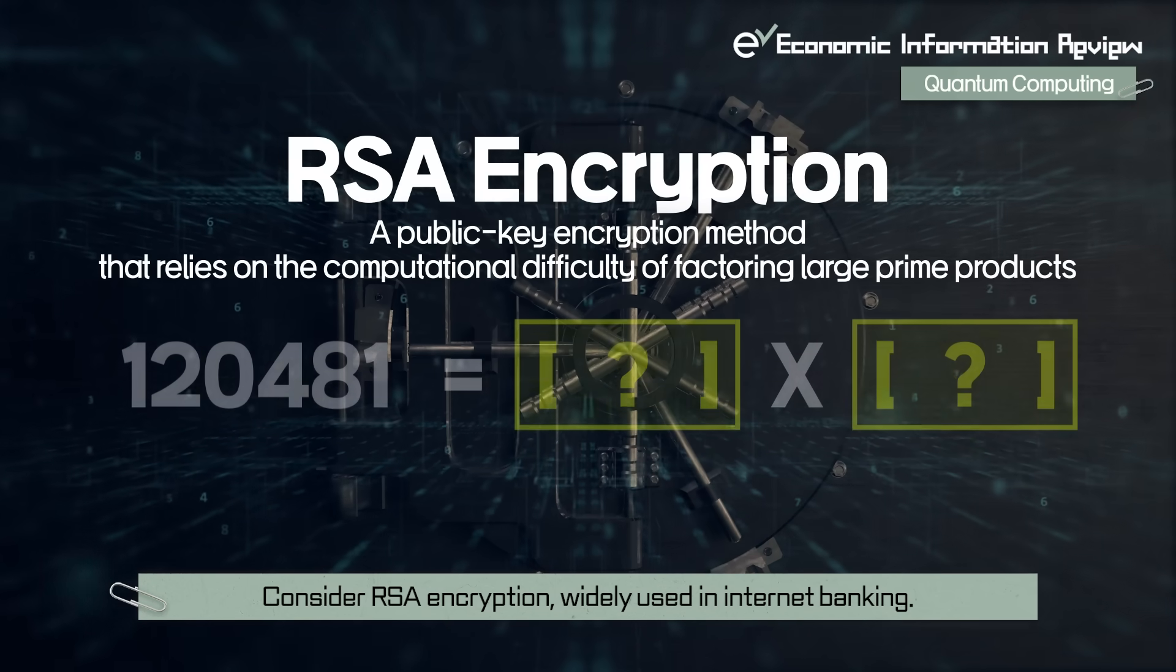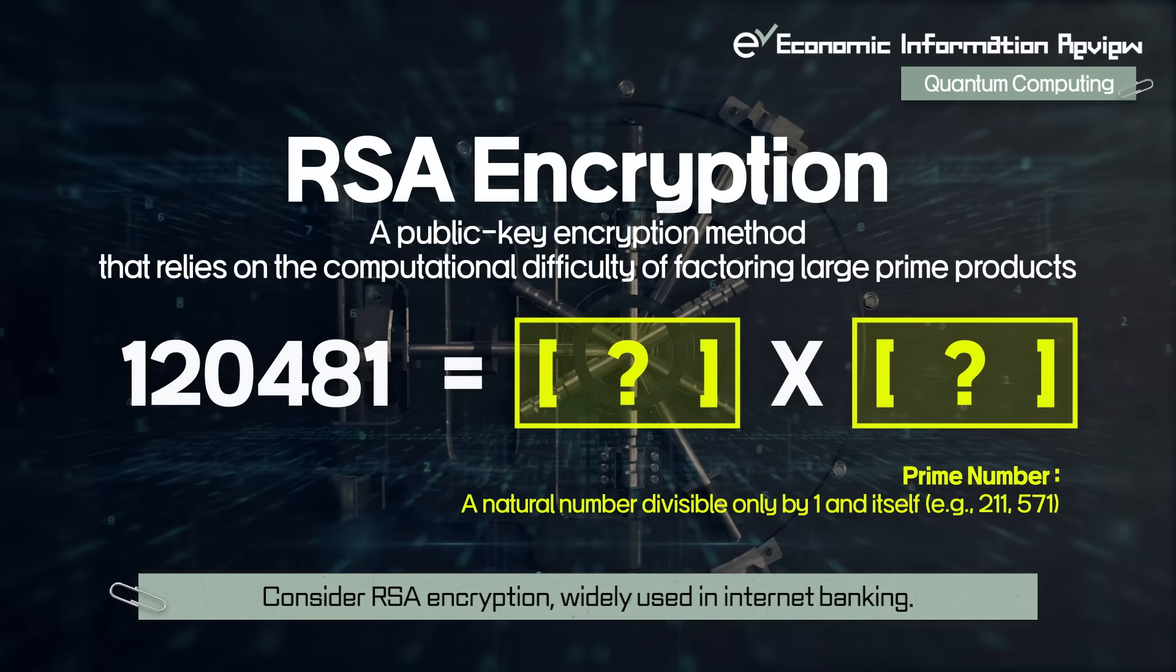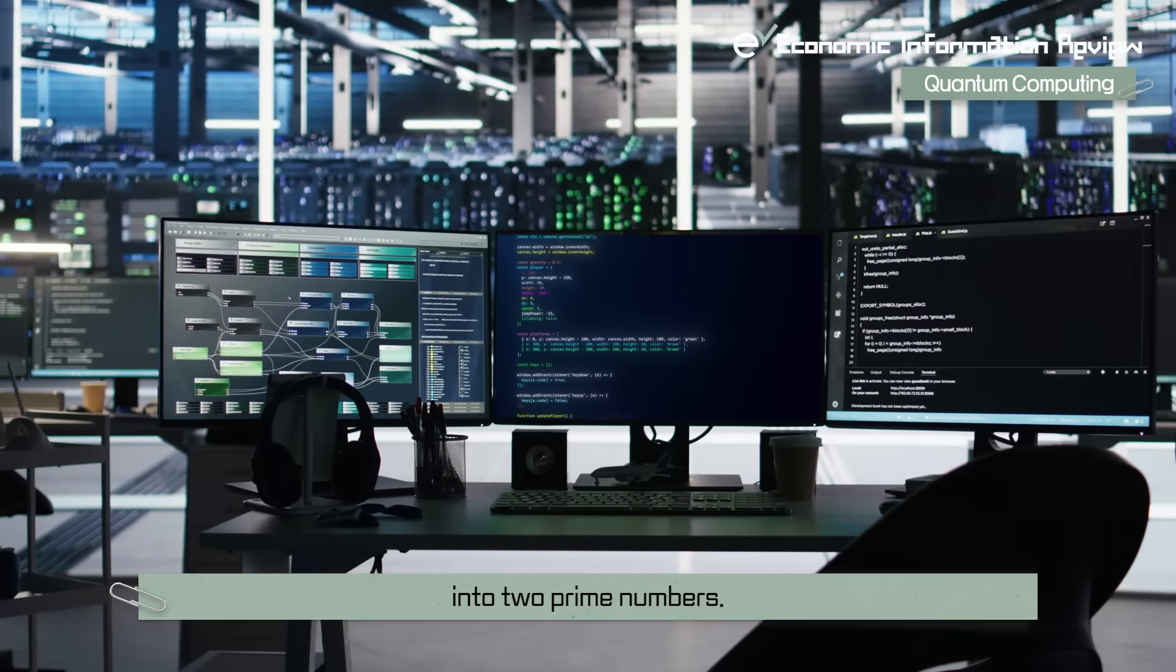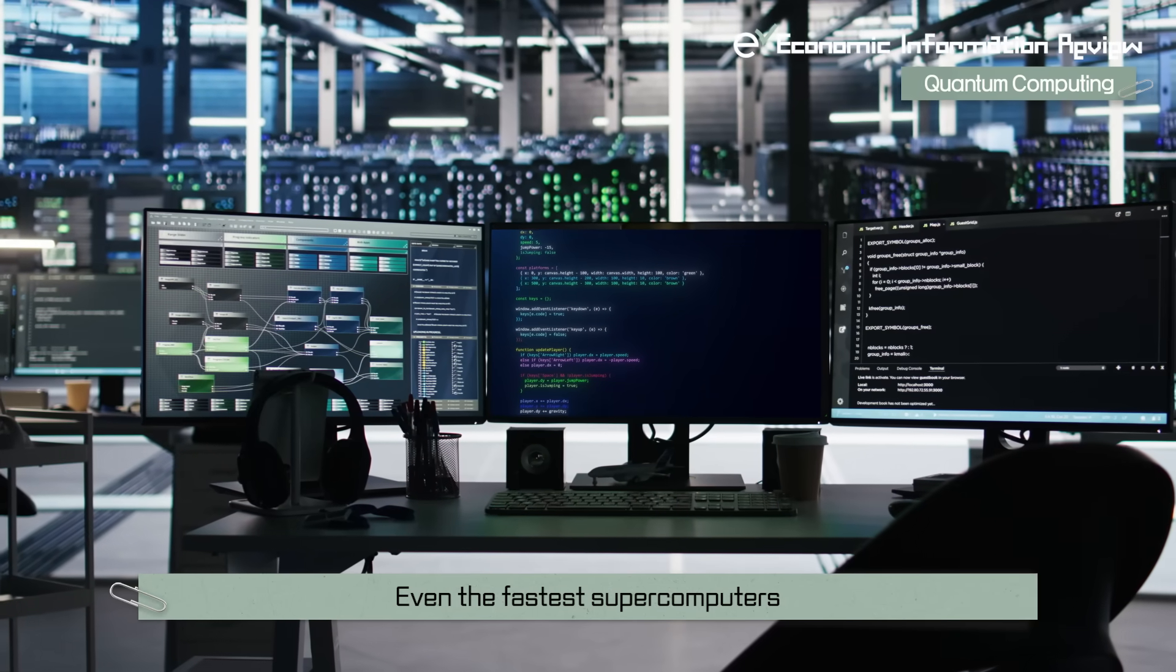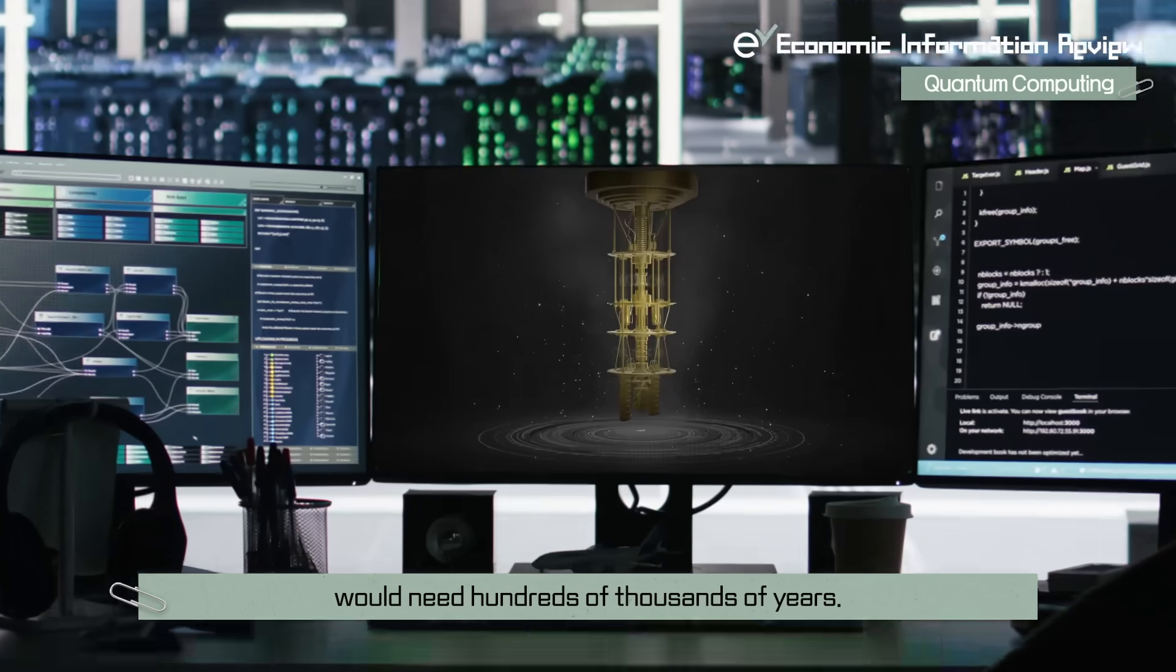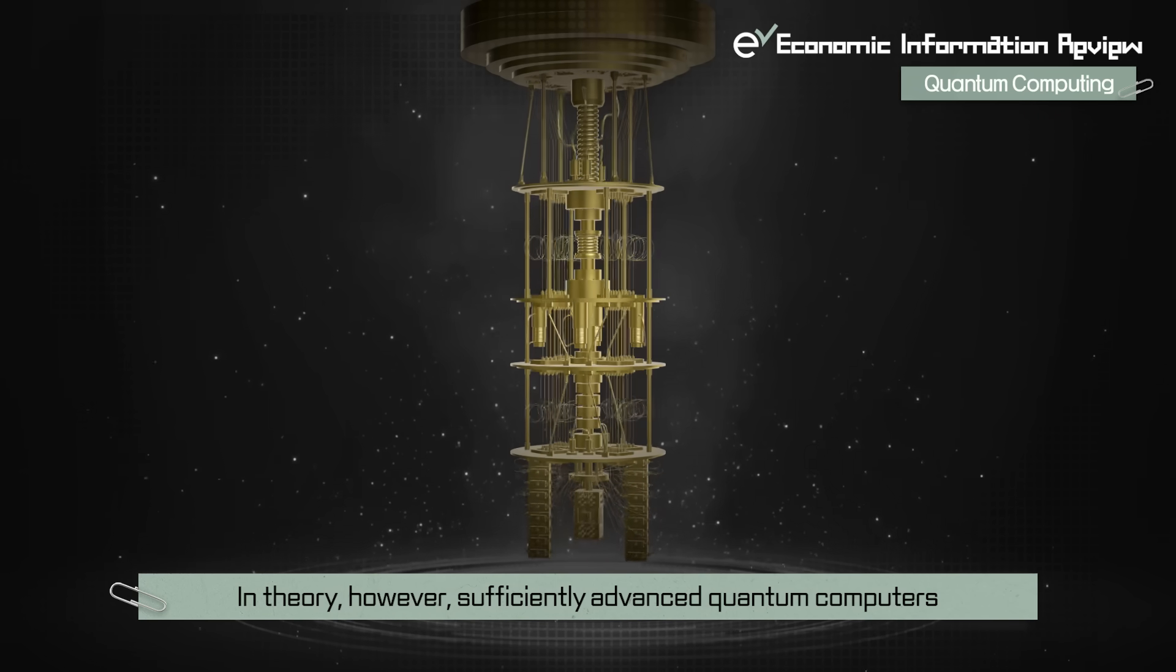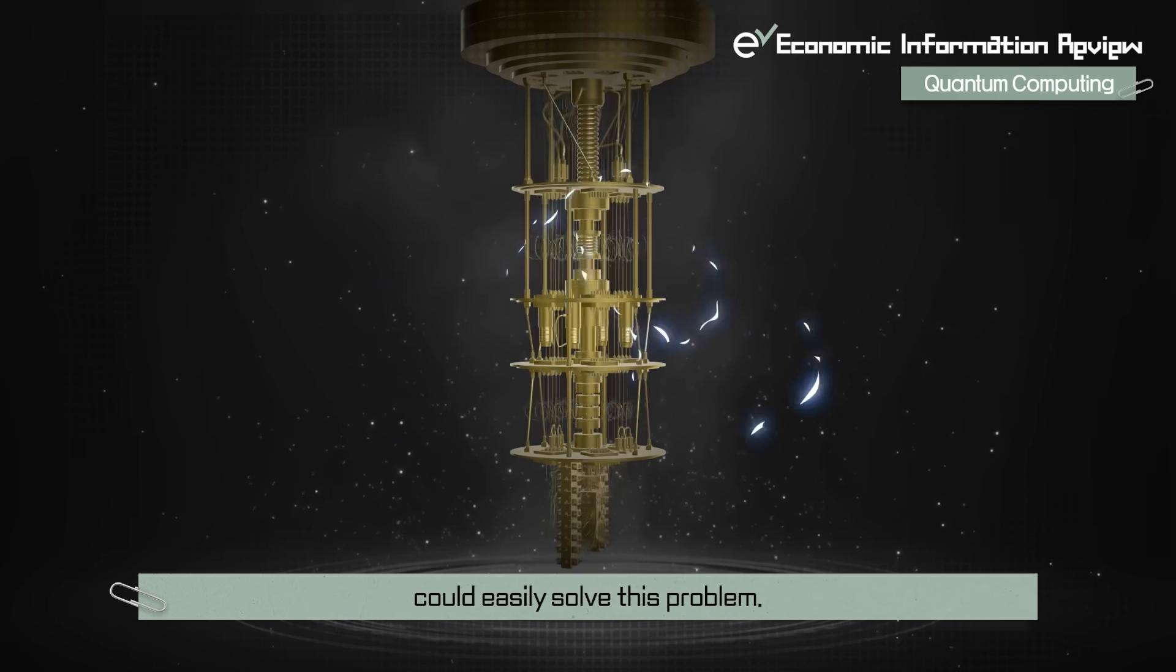Consider RSA encryption, widely used in Internet banking. It can be broken only by factoring an enormous number into two prime numbers. Even the fastest supercomputers would need hundreds of thousands of years. In theory, however, sufficiently advanced quantum computers could easily solve this problem.